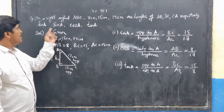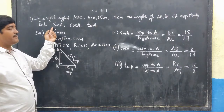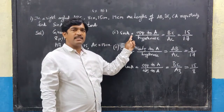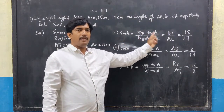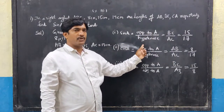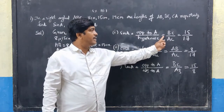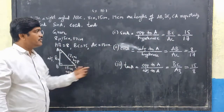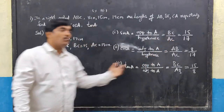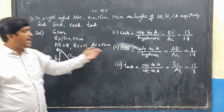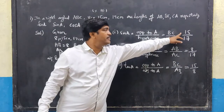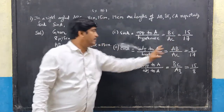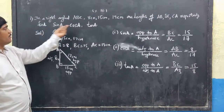Now I will solve the problem. First, sine A is nothing but opposite to A by hypotenuse. From the figure, the opposite is BC and the hypotenuse is AC. So sine A = BC/AC = 15/17. Similarly, I will go for cos A.